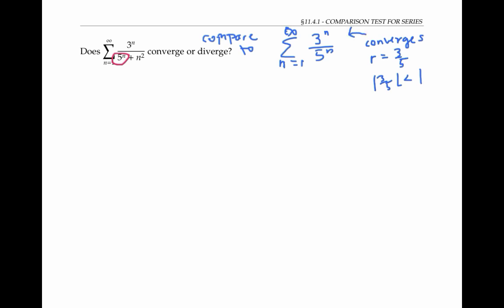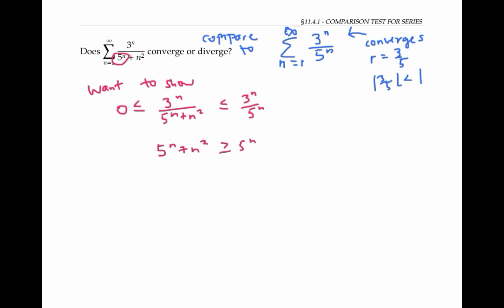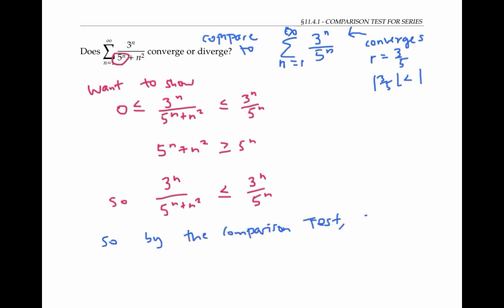In order to use the comparison theorem, I need to show that the terms of our series are less than or equal to the terms of the geometric series, since being smaller than a convergent series guarantees convergence. Everything is positive, and five to the n plus n squared is greater than or equal to five to the n. When you divide by a bigger number you get a smaller ratio, so three to the n over five to the n plus n squared is less than or equal to three to the n over five to the n. We've shown the required inequality holds, and so by the comparison theorem, since the sum of three to the n over five to the n converges, so does our original series.